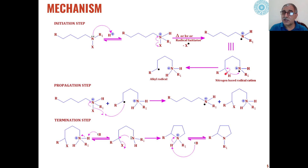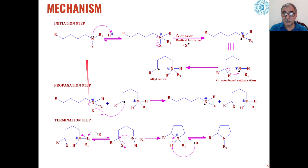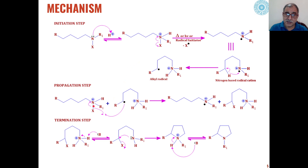An alkyl radical is formed at the delta carbon, and this alkyl radical then reacts with another molecule of ammonium species formed in the first step by reaction with the proton. The X radical which can be formed will lead to formation of a carbon-halogen bond at the delta position.